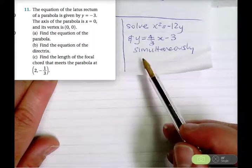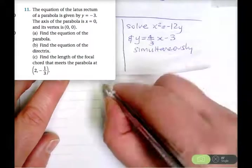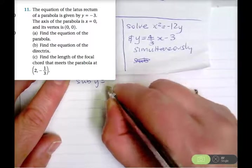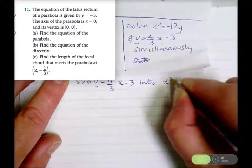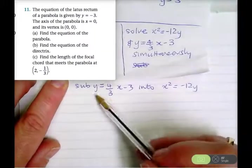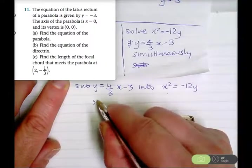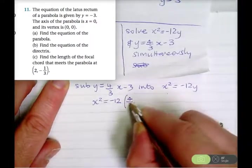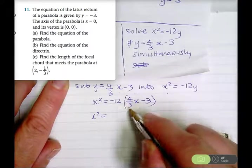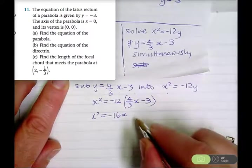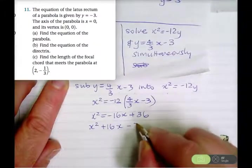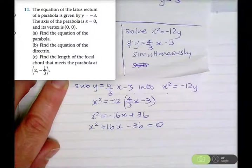Substituting y equals 4 over 3 x minus 3 into x squared equals negative 12y gives x squared equals negative 12 times (4 over 3 x minus 3). Expanding: x squared equals negative 16x plus 36. Taking everything to the left-hand side gives x squared plus 16x minus 36 equals 0.